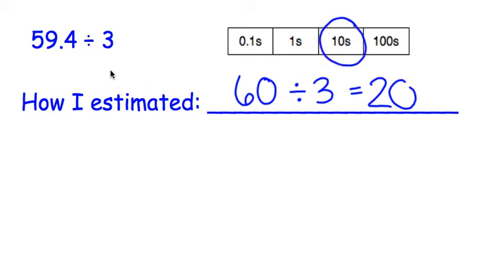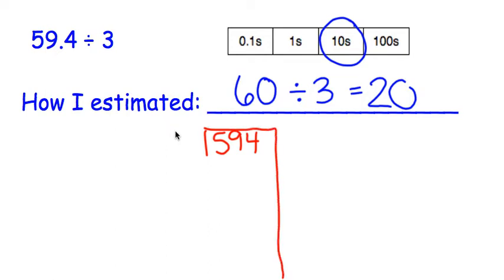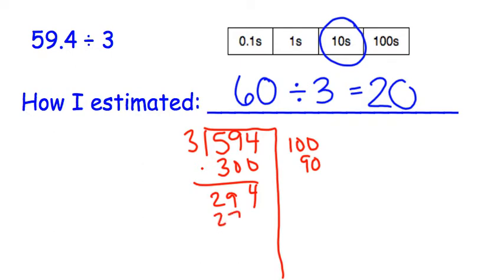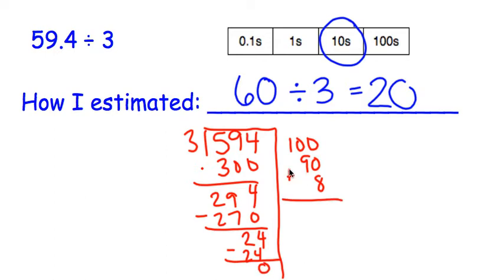So I'm going to circle that box. Now when I actually solve this problem, I should have an answer in the tens place, and that's how I'll know if I'm right or not. So I'm going to take out the decimal for now and solve this using partial quotients. I'm going to take out 100 groups, then 90 groups, then 8 groups, and add my partial quotients. We know this answer has to be in the tens, so we can put our decimal back in the tens place.